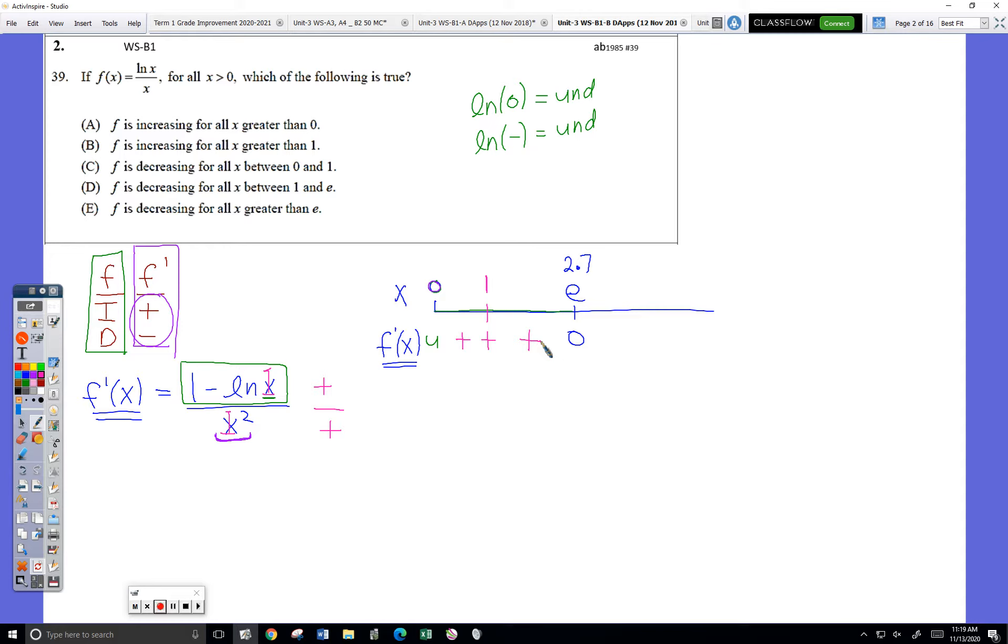Questions from anyone? Anything bothering anybody? Quick question: when it says tangent squared, does that just mean like two times tangent? You have to remember that tangent squared means tangent times tangent, like that.